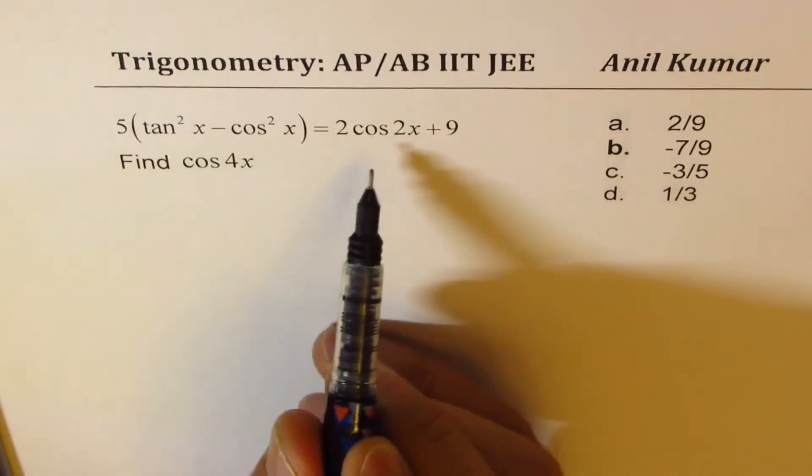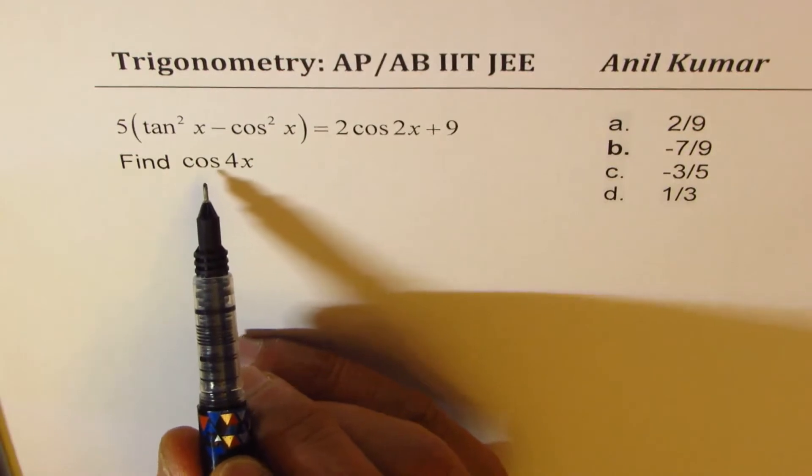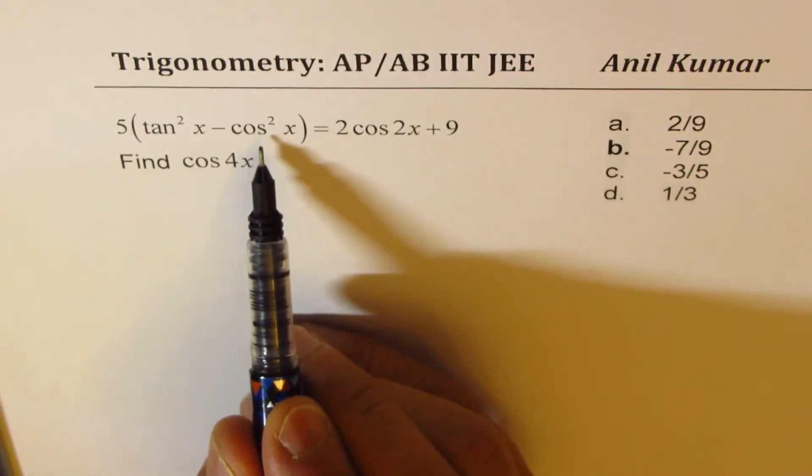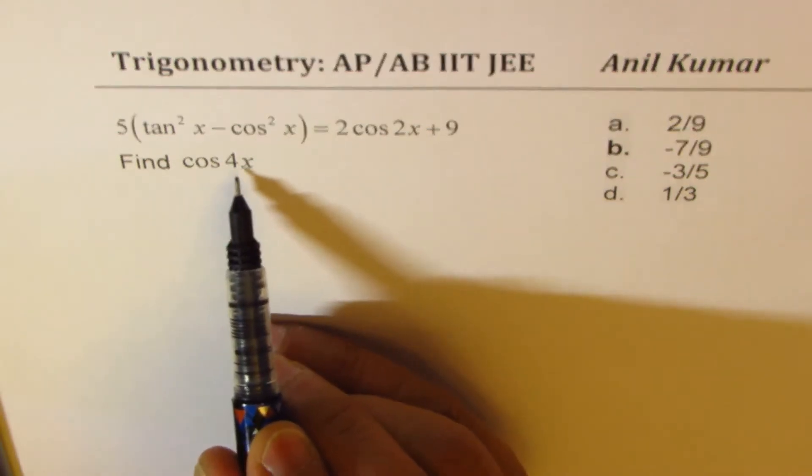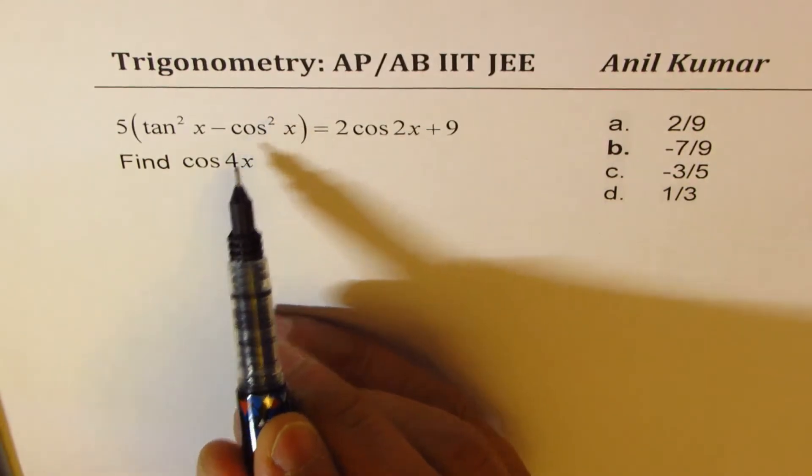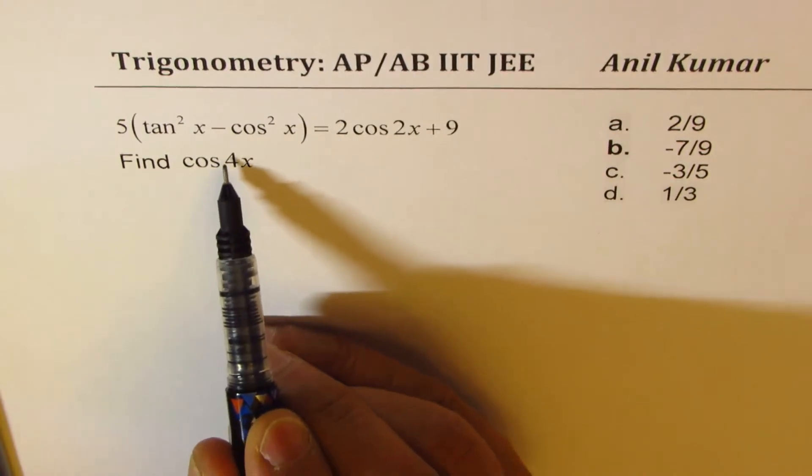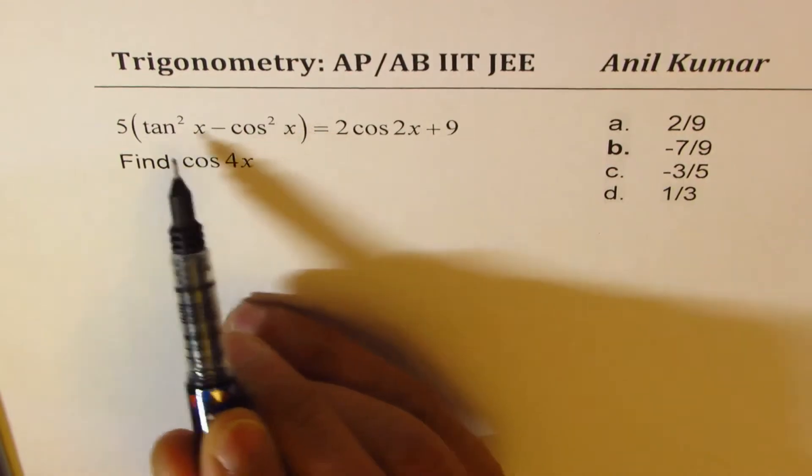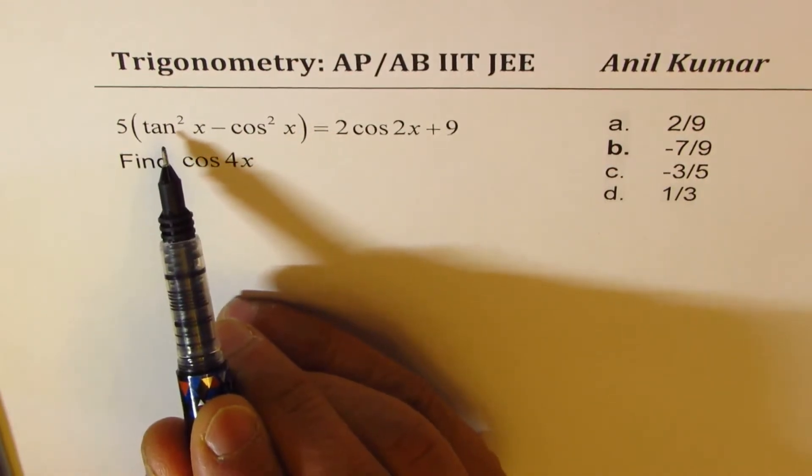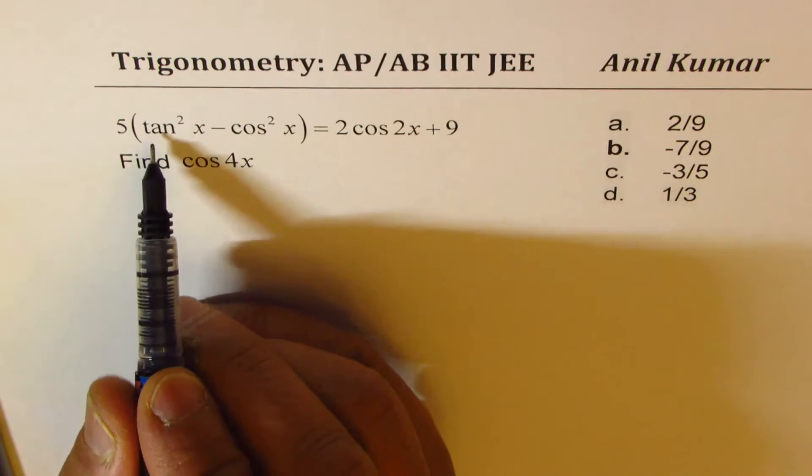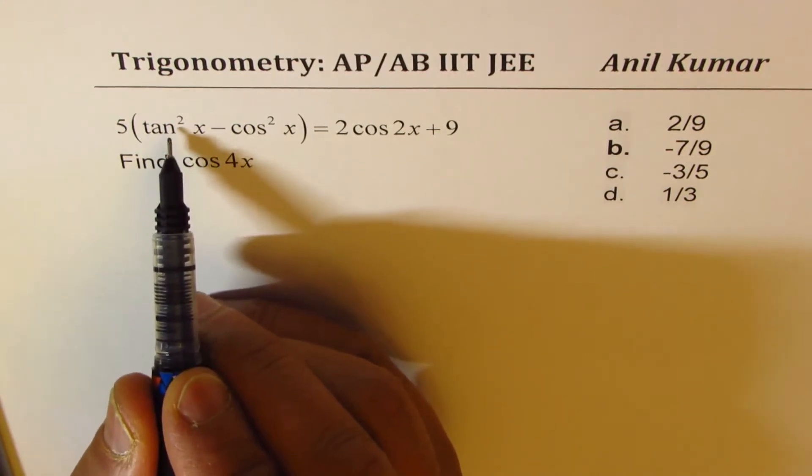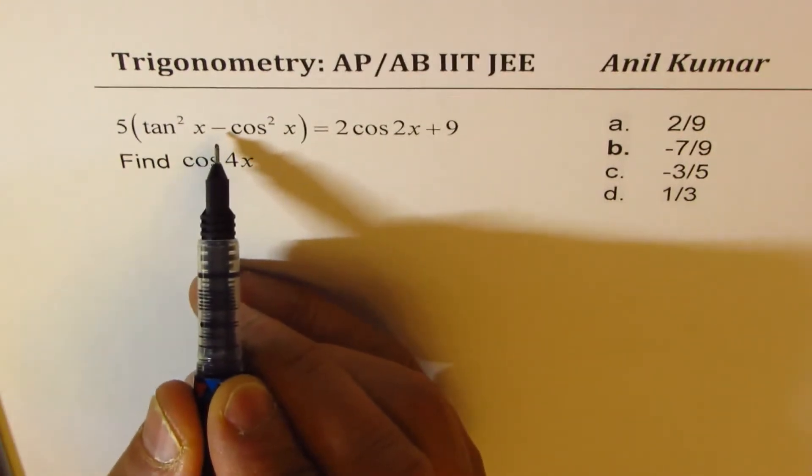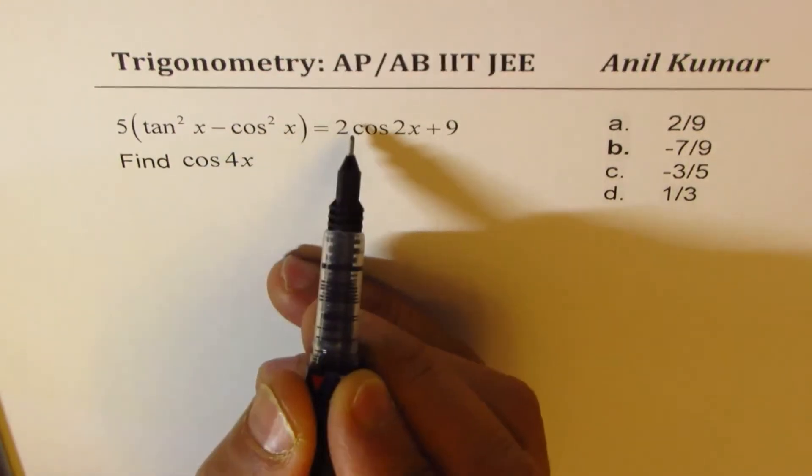Now the strategy here is to understand that cos 2x can be related with cos square x, and similarly, cos 4x can be related with cos square 2x. So we could find cos 4x by writing all these terms in terms of cosine. We can begin by writing tan square x as secant square x minus 1, and then we'll solve the equation in terms of cos square x.